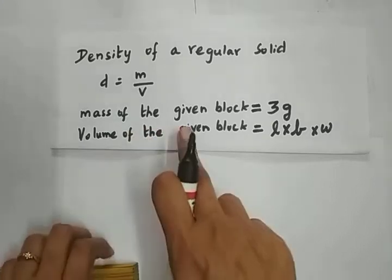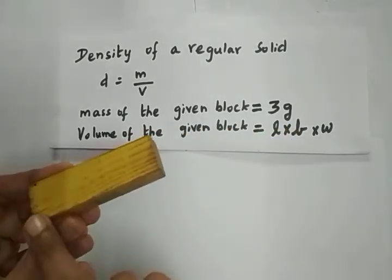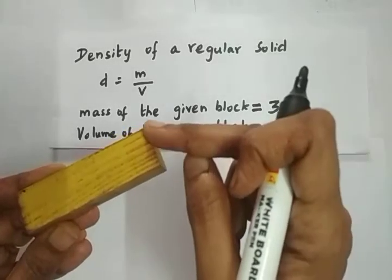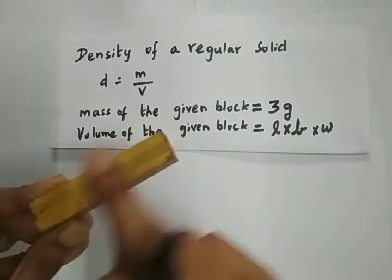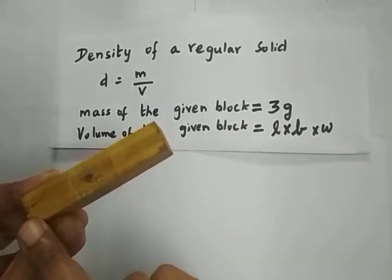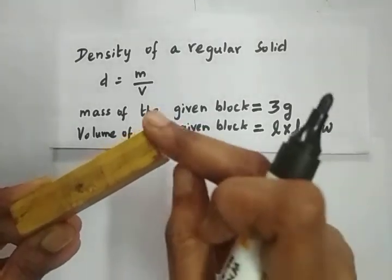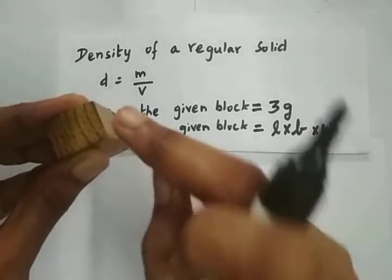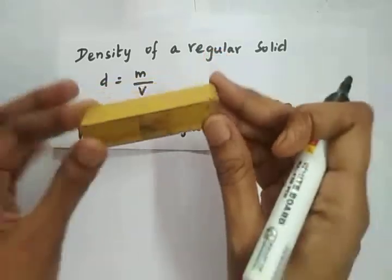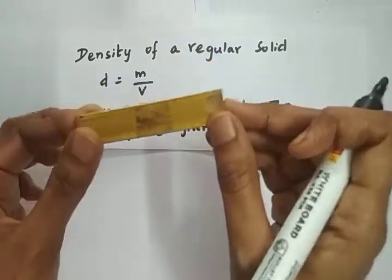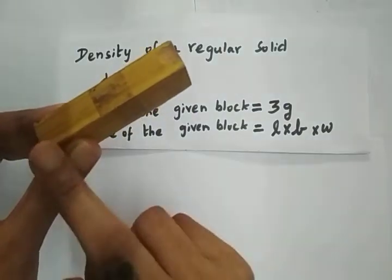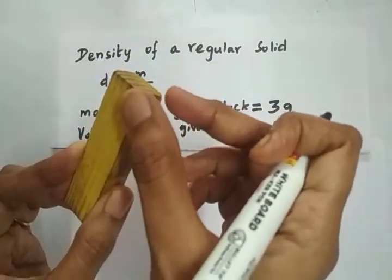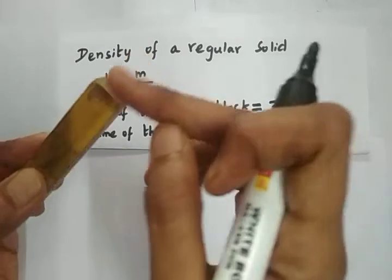Now we will learn how to find the volume of this given block. To find the surface area of a face, we multiply length into breadth. To find the volume — the space occupied by the entire block — we use the formula: base area into the width or height. So the volume is L into B into its height.